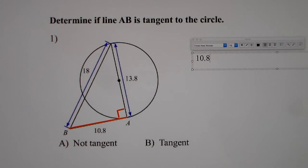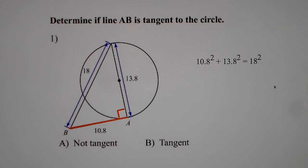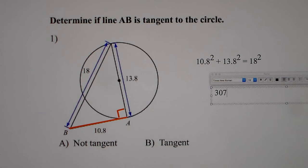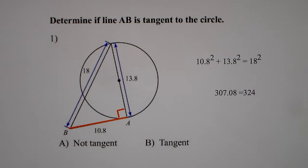So what we do, we do 10.8 squared plus 13.8 squared equals 18 squared. Then you put that in the calculator. 10.8 squared plus 13.8 squared gets you 307.08. And we want to know, is that equal to 18 squared? So do 18 squared. We get that equal to 324. Since they're not equal to each other, that means it's not tangent. So that line AB is not tangent.